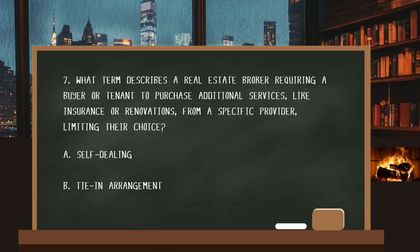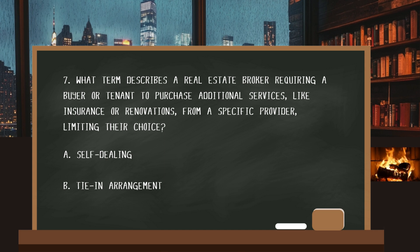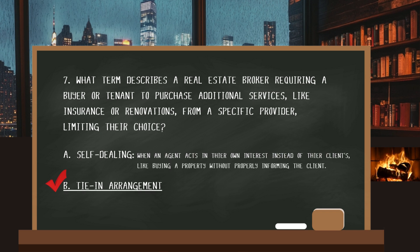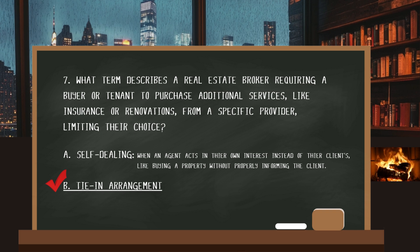Number seven. What term describes a real estate broker requiring a buyer or tenant to purchase additional services — like insurance or renovations — from a specific provider, limiting their choice? The answer is B: a tie-in arrangement. Self-dealing is when an agent acts in their own interest instead of their client's, like buying a property without properly informing the client.